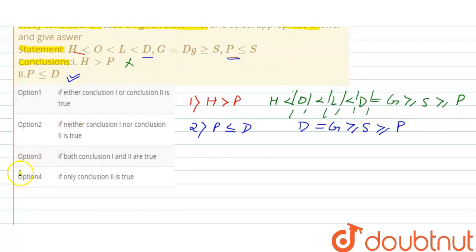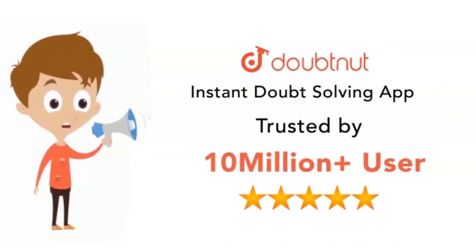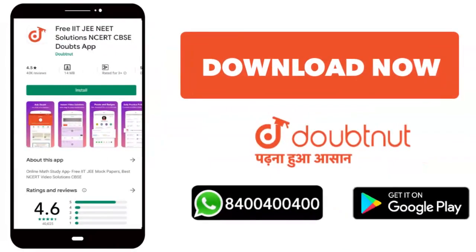The option here will be fourth correct. If only conclusion second is true. Thank you. From the class situation, meet IIT, NEET and advance level, 10 million more students. Today you can download the Doubtnut app or WhatsApp. Call 844444.